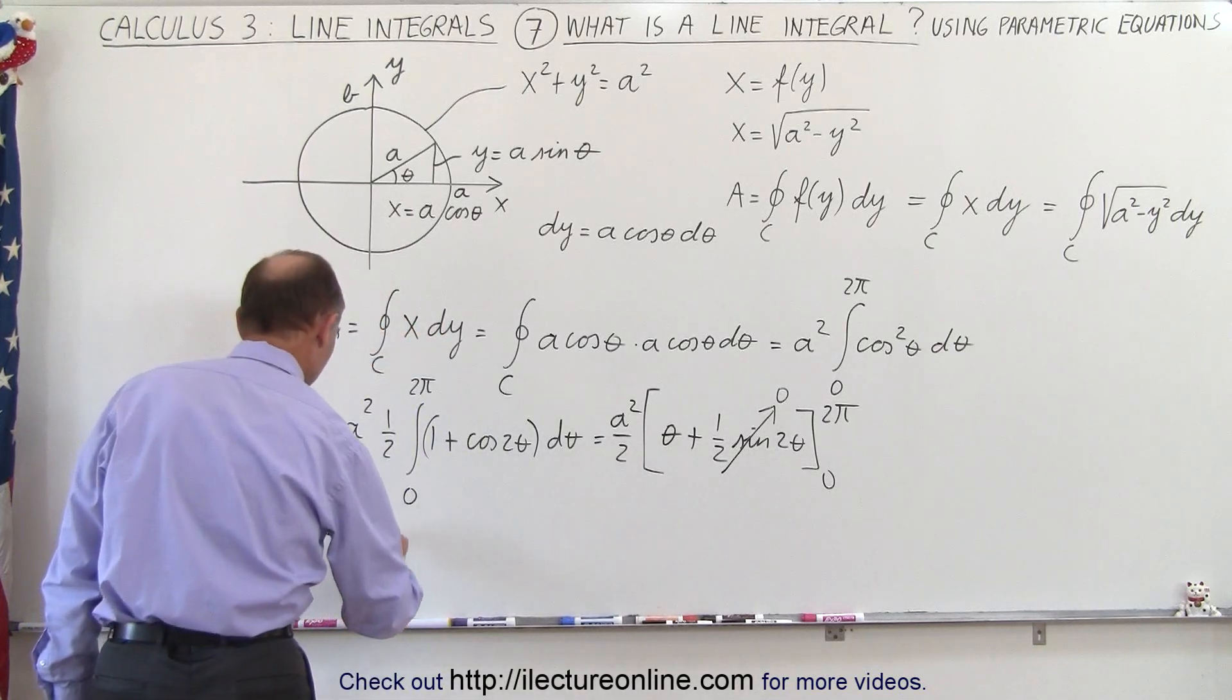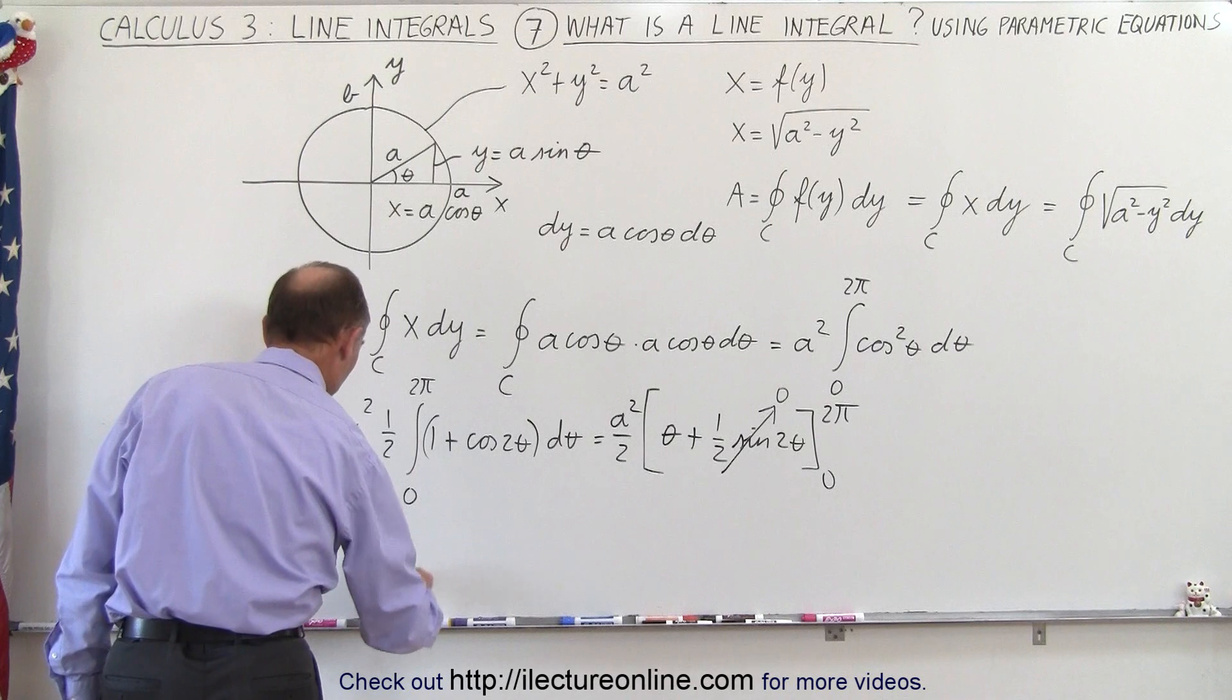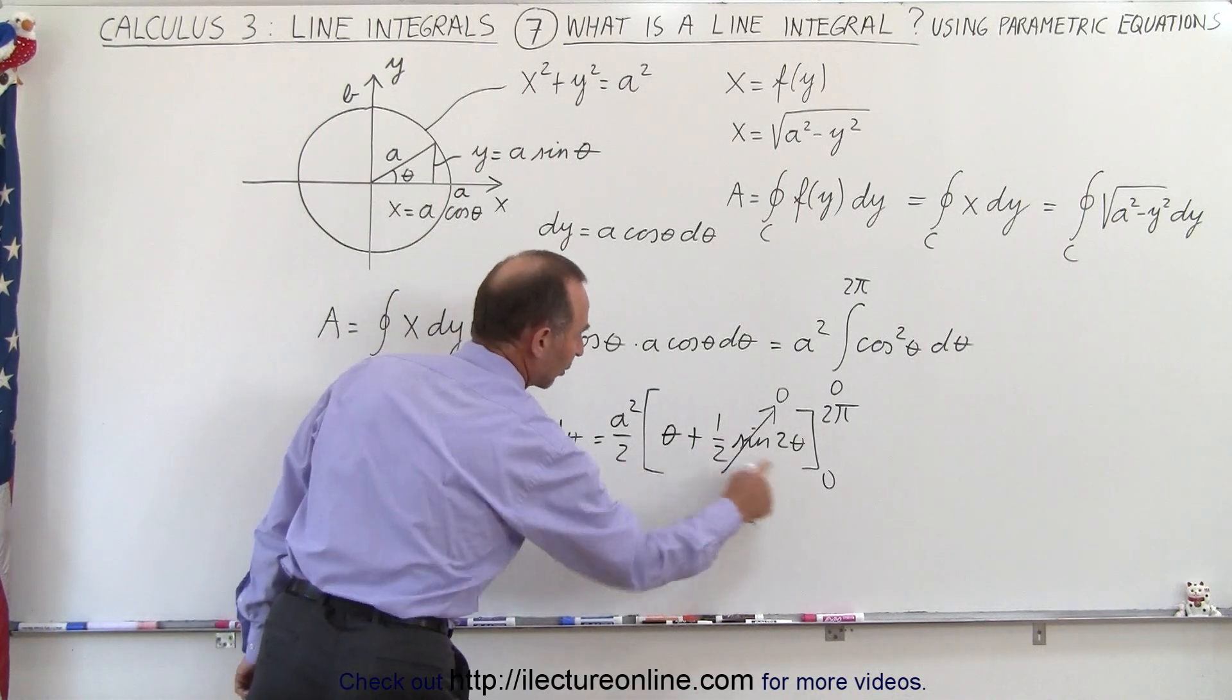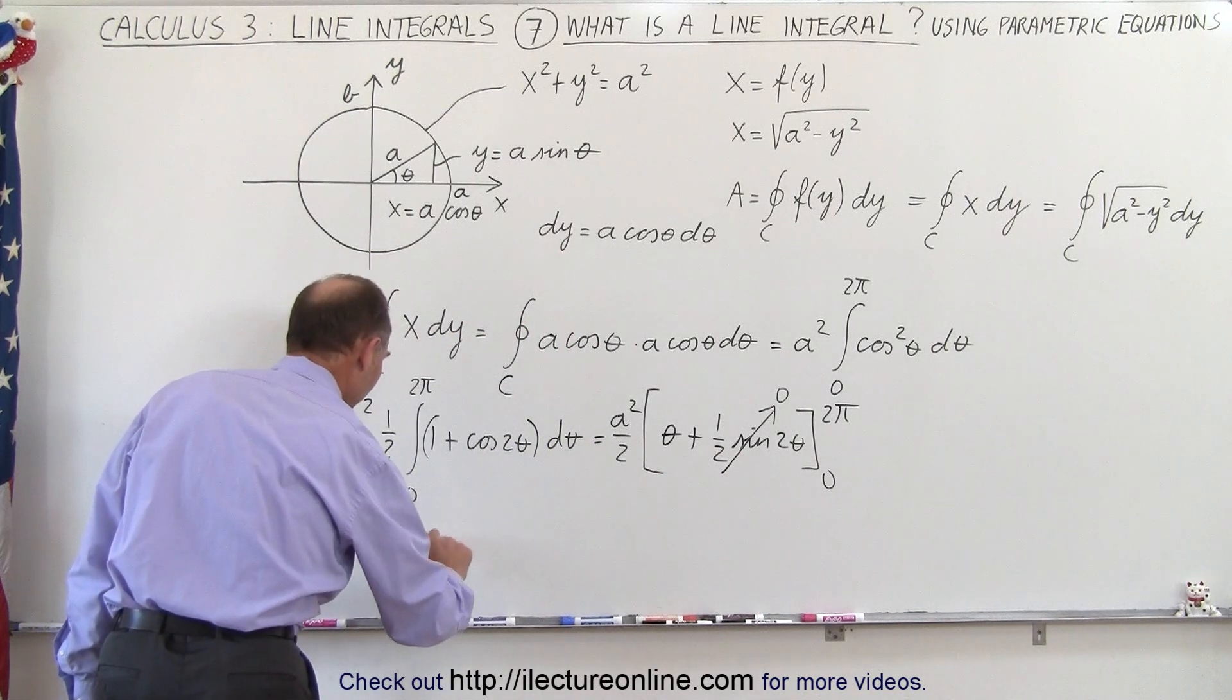So all we have to do is plug in what we have over here, so this would become equal to a squared over 2 times, plug in the upper limit, we get 2 pi, plug in the lower limit, we get 0, so we multiply this times 2 pi.